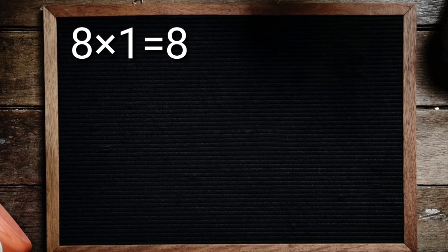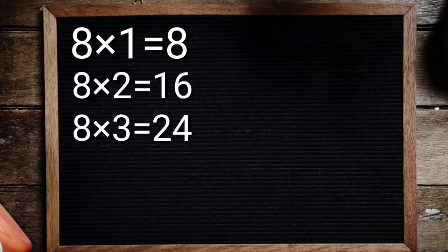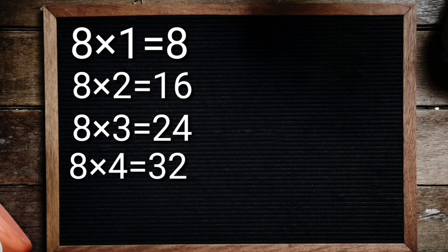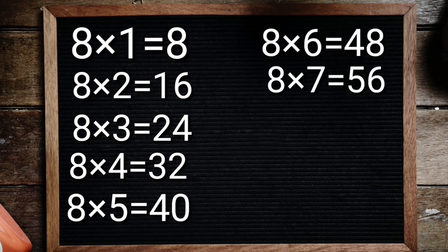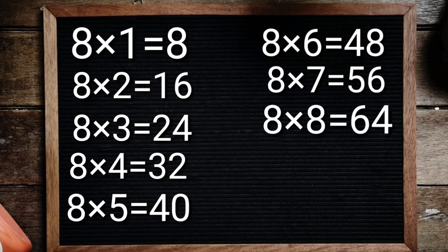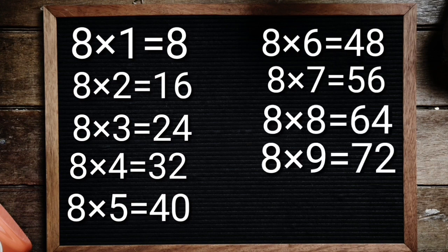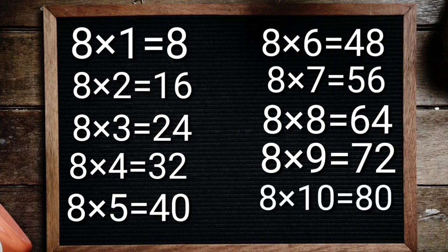8 1's are 8, 8 2's are 16, 8 3's are 24, 8 4's are 32, 8 5's are 40, 8 6's are 48, 8 7's are 56, 8 8's are 64, 8 9's are 72, 8 10's are 80.